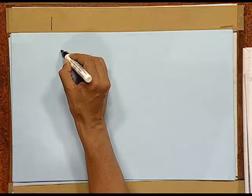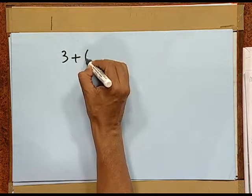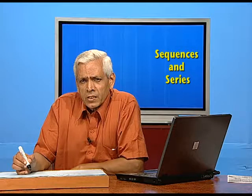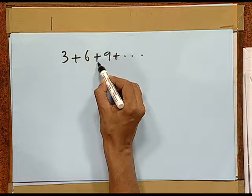Now, consider what I write: 3 + 6 + 9 + … . What I have written is not a sequence — it looks like a sequence, but there is a difference. Here a plus sign is coming between terms. So a series is almost like a sequence, but the only difference is that each term is connected by a mathematical sign, mostly plus.